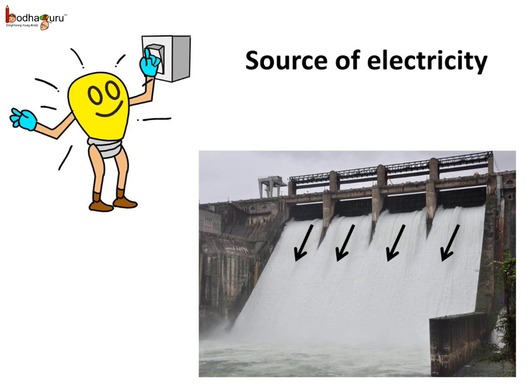We cannot forget that water is a source of electricity. Water is a renewable energy source. Huge dams are made on rivers and lakes to produce clean hydro energy. When water is released, it comes down with great force, and that force is used to turn turbines to produce electricity.